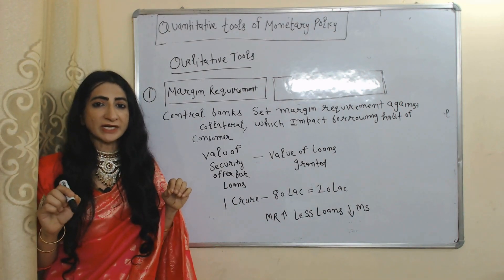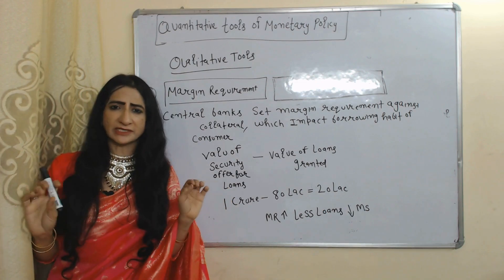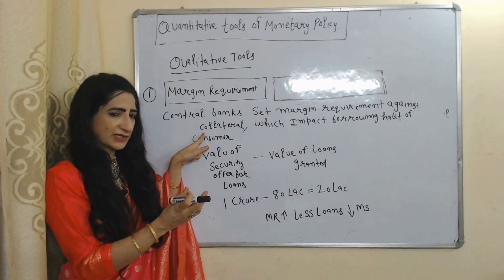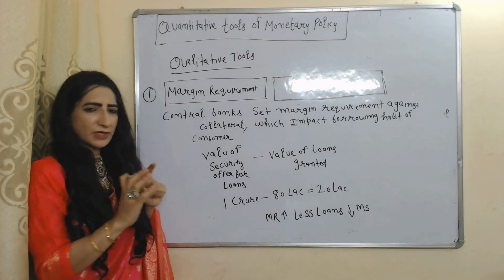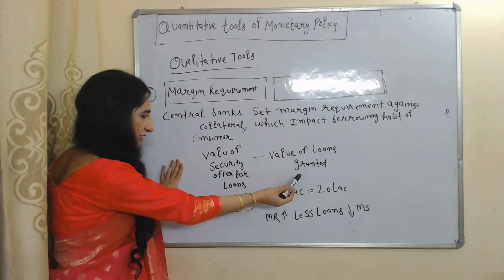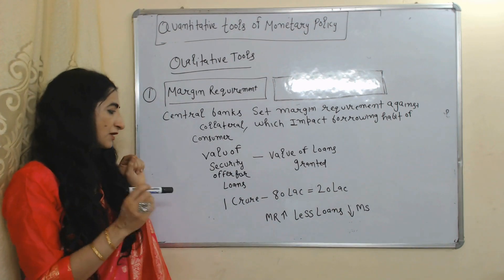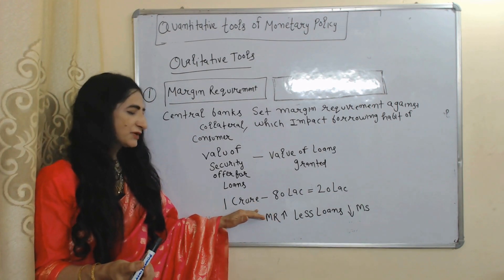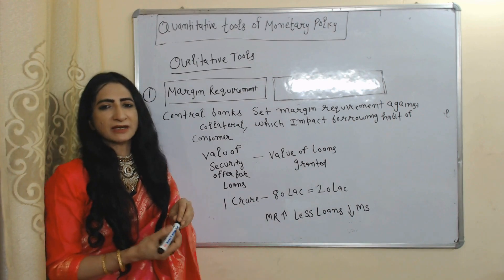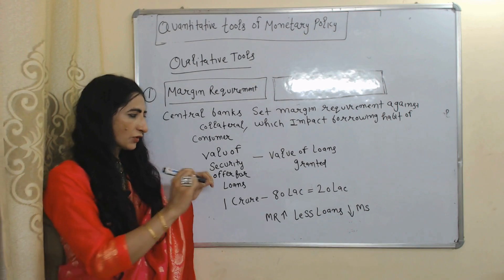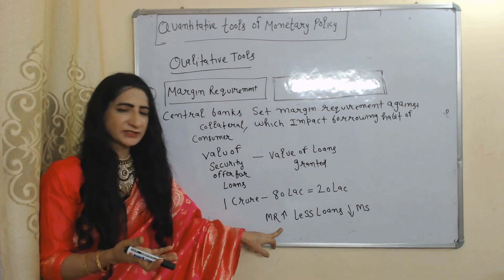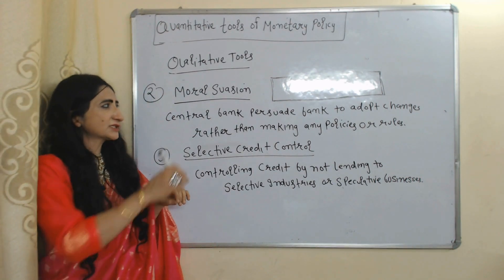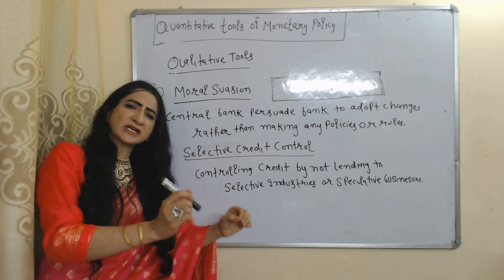Now we will see qualitative tools — qualitative tools impact a specific sector of the economy, not the entire economy. The first qualitative tool is marginal requirement. Central bank sets a marginal requirement against collateral, which impacts the borrowing habits of consumers. Marginal requirement = Value of security offered for loans minus value of loans granted. For example, if security value is 1 crore and loan granted is 80 lakh, the marginal requirement is 20 lakh. If the central bank wants to reduce money supply, it will increase the marginal requirement — people will take fewer loans and money supply will reduce.